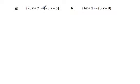So what we're going to do is change this to addition and add the opposite of negative 3x minus 6. And so this is equal to, then, negative 5x plus 7 plus, and in brackets,